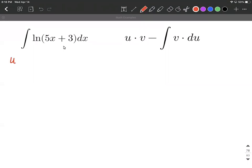So let's jump right in here. Let's pick out a value for u and a value for dv. The formula for integration by parts is over on the right-hand side. So because we have a natural log involved here, we tend to want to pick that to be our u value. So we have the natural log of 5x plus 3 is going to work for our value of u.